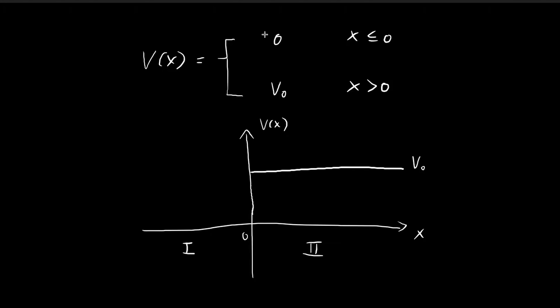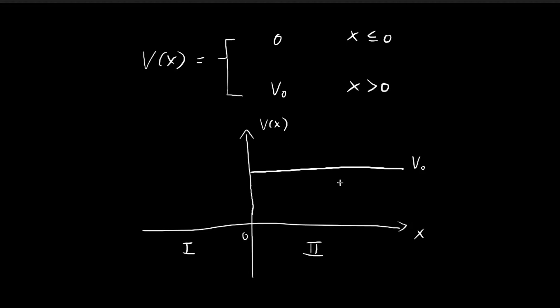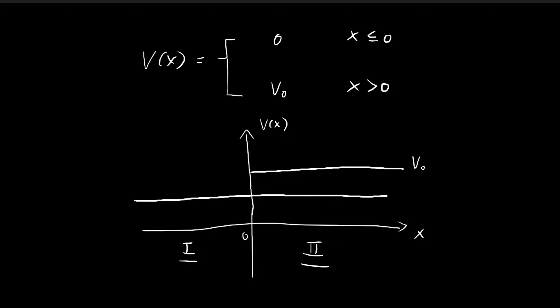In part a we're dealing with a potential that behaves in a way we can represent graphically with a graph. What we're going to find is the reflection coefficient for the case when the energy level is smaller than V₀. We divide the setup into two regions: region 1 where x is smaller than 0, and region 2 where x is larger than 0, and we'll solve the Schrödinger equation for each part. Since E is smaller than V₀, the energy level sits somewhere below V₀.